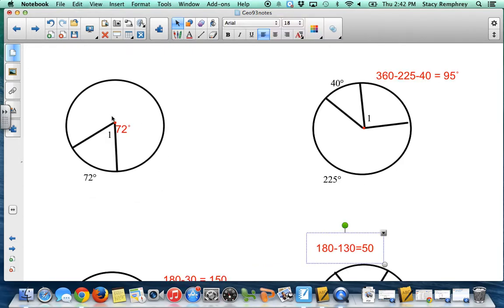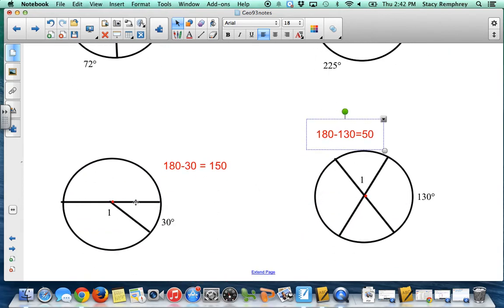Okay, for the answers, I already told you the angle one was 72. In this one, the whole circle is 360, so I took the 360 and subtracted the two other arcs off to find that was 95. This is a semicircle, so I did 180 minus 30 and found this was 150. In this one, a semicircle again, I subtracted the 130 and found out this was 50.